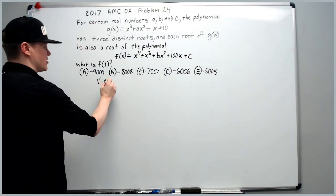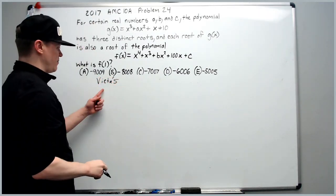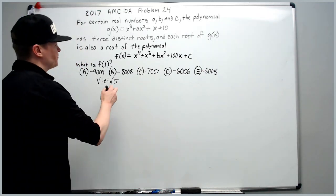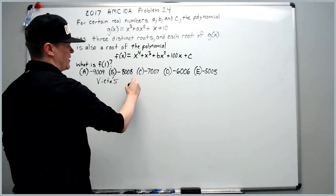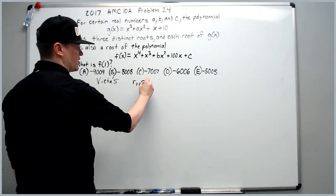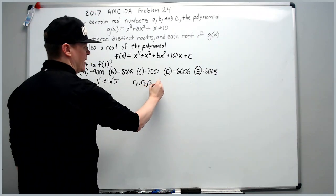This is known as Vieta's formulas. You can look them up online, maybe I'll make a video in the future about it. Roots, it's common to call them r with a subscript. So we'll have r1, r2, r3, and r4.